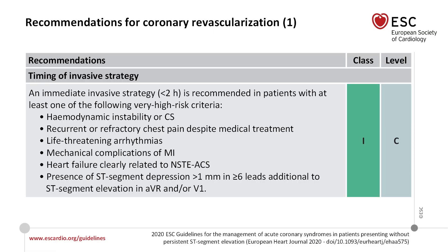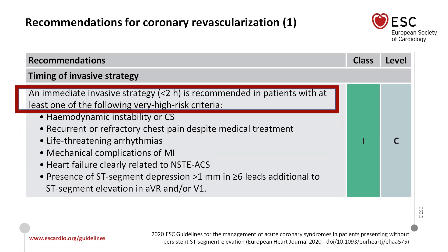An immediate invasive strategy — less than 2 hours — is recommended in patients with at least one of the following very high risk criteria. First: haemodynamic instability. If the patient is haemodynamically unstable, that is an indication to go immediately to the cath lab. Second: recurrent or refractory chest pain despite maximum medical treatment. Third: any life-threatening arrhythmias that keep occurring where medical treatment alone is insufficient.